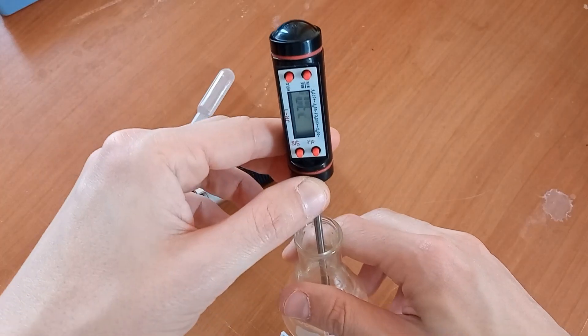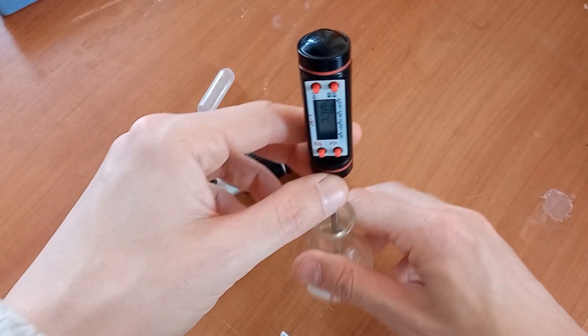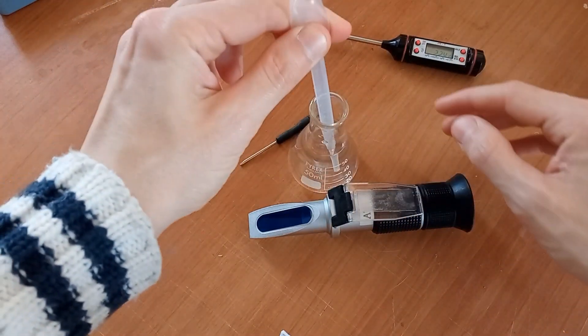Refractometer must be calibrated with water at 20°C before measurements. Our instrument is already calibrated but we show how to.